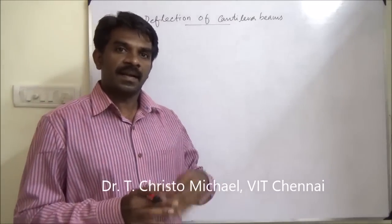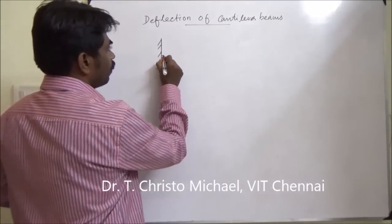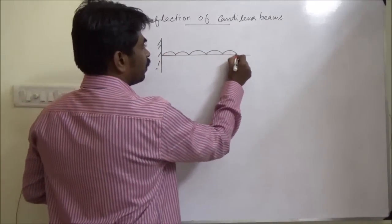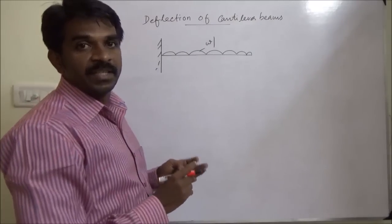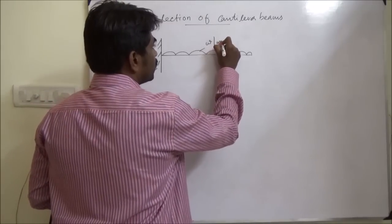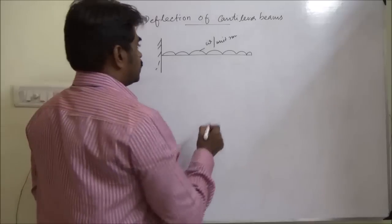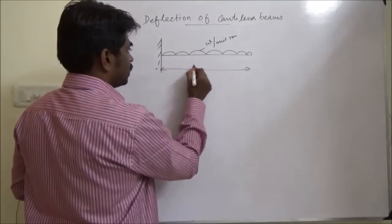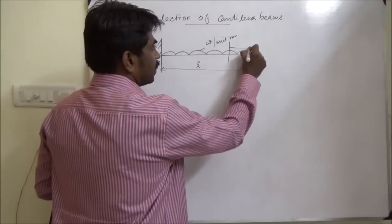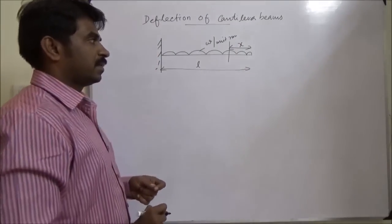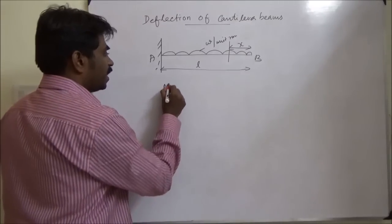Now let us discuss another case. The cantilever is subjected to UDL, uniformly distributed load W per unit run, and let the distance be L. Take X from free end A. Bending moment equation.